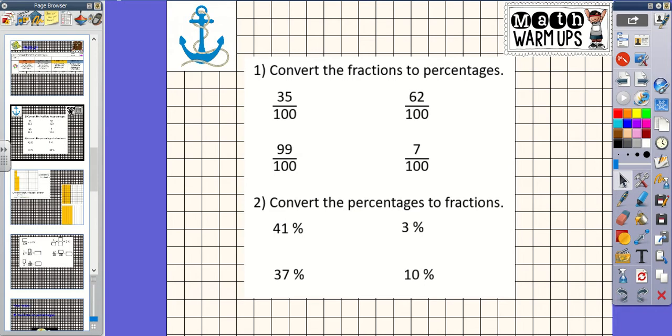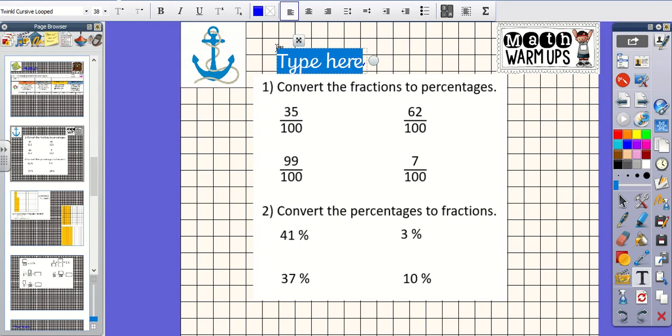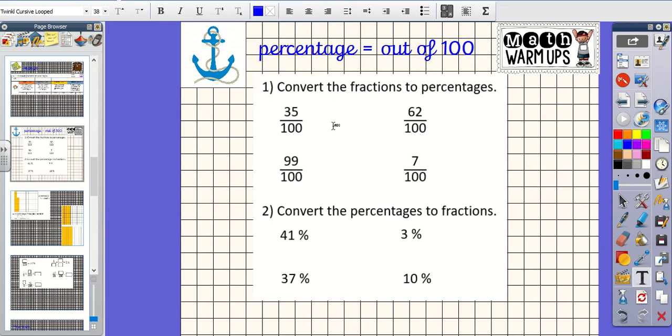So to warm our brains up, we are going to convert these simple fractions and percentages. Now from yesterday's lesson, we should all remember that percentage equals out of 100. So if our denominator on our fraction is 100, we can easily convert it to a percentage. This fraction here, 35 hundredths, we could say that is 35%. So because your denominator is 100, this one here is also 62%. We haven't got any converting to do because our denominator is 100 and we know that percentage means out of 100.